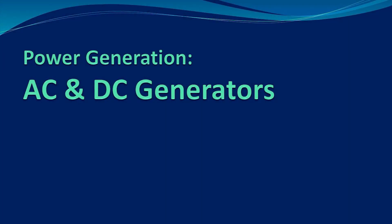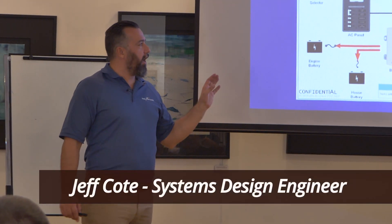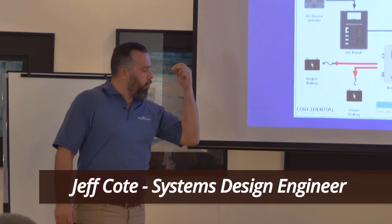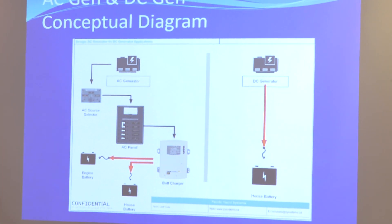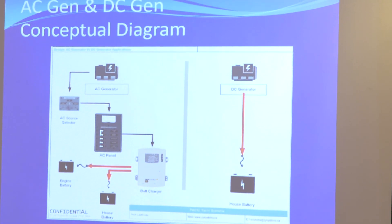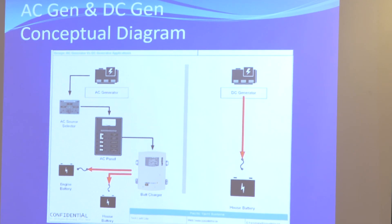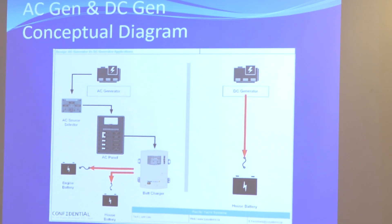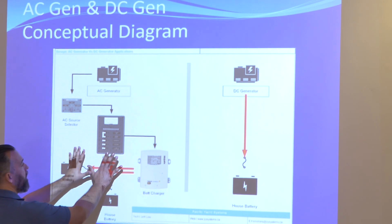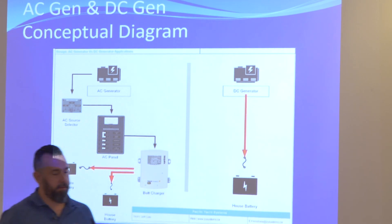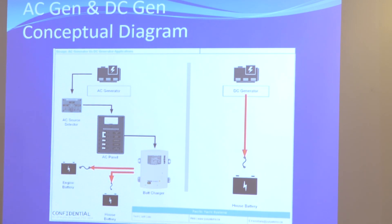All right, this is going to be, I think, the last one on power generation. There's not a lot here I want to show. Basically, this is a good way to understand what an AC generator does versus a DC generator. Because when it comes to troubleshooting — my batteries aren't charging because of my generator — look at what's involved here versus what's involved here. There's a lot of things you need to understand that happens on the output of an AC generator to get your batteries to recharge.